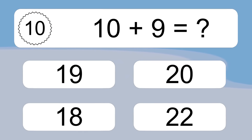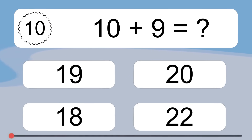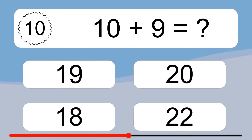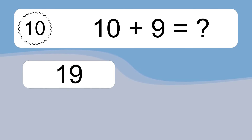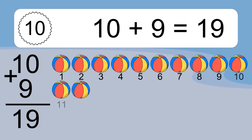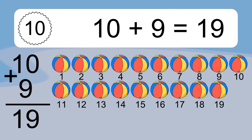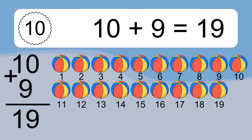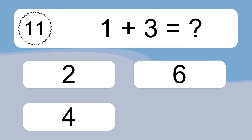10 plus 9 equals what? 10 plus 9 equals 19. Let's count it: 1, 2, 3, 4, 5, 6, 7, 8, 9, 10, 11, 12, 13, 14, 15, 16, 17, 18, 19.